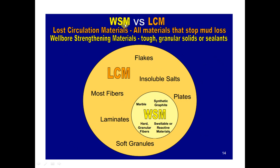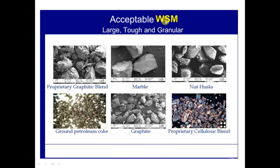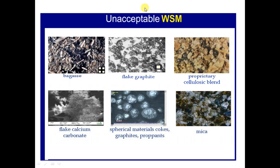What is the difference between well-bore strengthening material and LCM material? LCM or lost-circulation material is any material that stops mud loss. But well-bore strengthening material must be tough and granular solids or sealants only. We do not use flakes, insoluble salts, blades, laminates, or soft granules. Instead, we use marble, synthetic graphite, hard granular fibers, and swellable or reactive materials. Acceptable well-bore strengthening materials include large tough granular materials such as nutshells, graphite, marble, and ground petroleum coke. Unacceptable materials include flake graphite, flake calcium, mica, and cellulose blades.